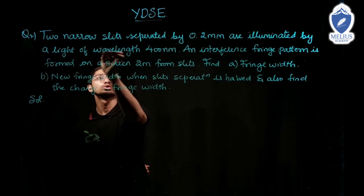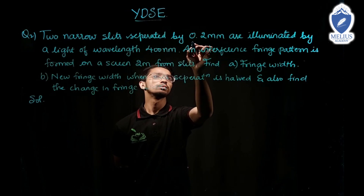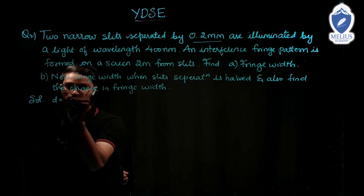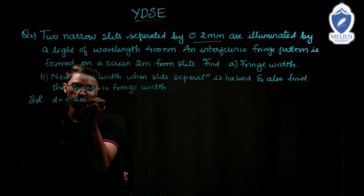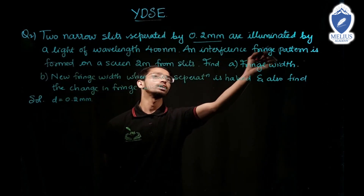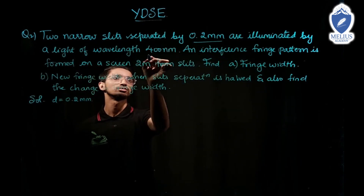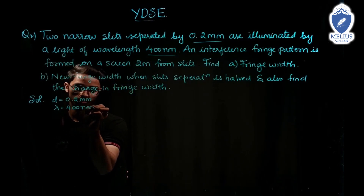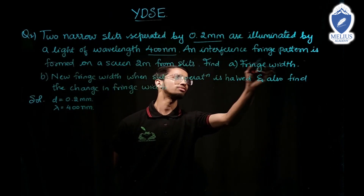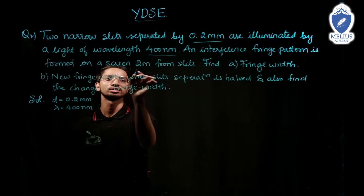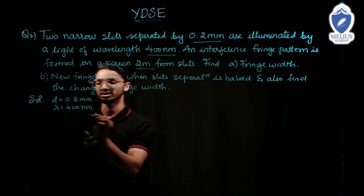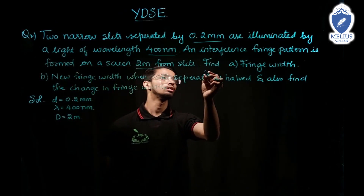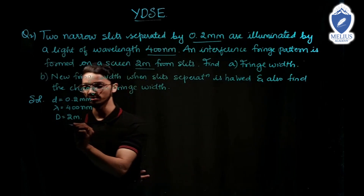Next question: two narrow slits separated by small d = 0.2 millimeter are illuminated by light of wavelength lambda = 400 nanometer. An interference fringe pattern is formed on a screen at capital D = 2 meter from the slits. Find the fringe width beta.